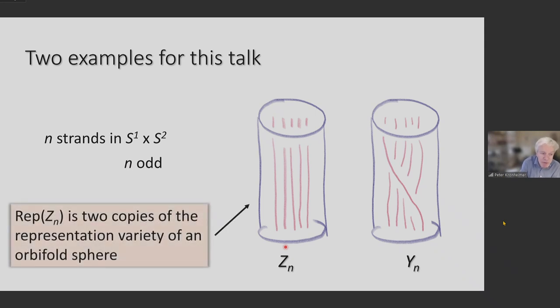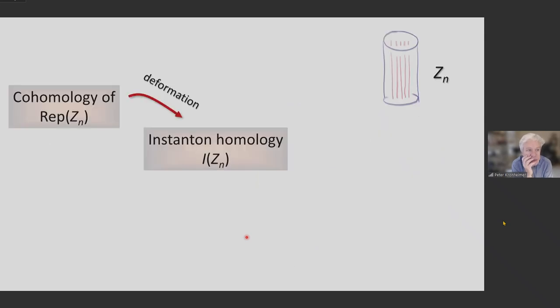I mentioned the representation variety of the pair. What is the representation variety in the case of ZN? It consists of two pieces, each of which is a copy of something which is familiar in other contexts. It's the two copies of the representation variety of the cross section here, which is the sphere with N marked points. You feel like an orbifold sphere. That representation variety of the orbifold sphere is described as a moduli space of certain parabolic bundles, and it's a very well-studied Fano variety. The representation variety of ZN is then two copies of that.